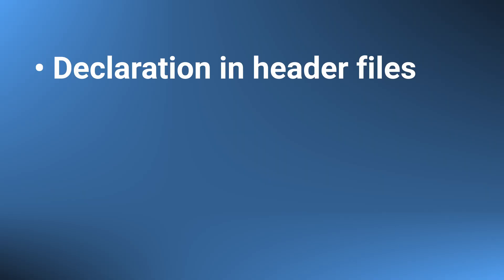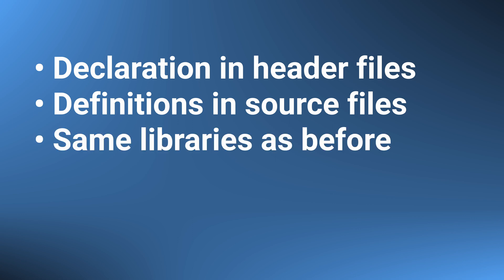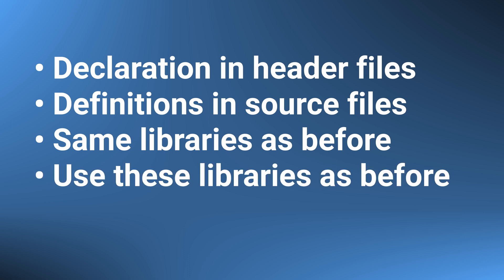Lots of things stay exactly as we had them before. We still declare stuff in the header file, we still define stuff in the source file, and we still create static, shared, or header-only libraries from these files, and we still use these libraries just like we did before. For a refresher, see the headers and libraries lecture from before.